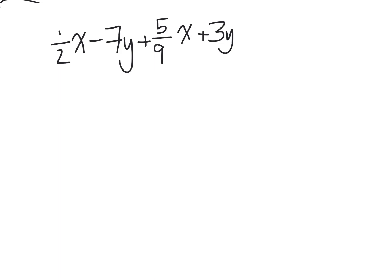Alright, so I have my example question here. I have 1/2 x minus 7y plus 5/9 x plus 3y. So I know that this term right here and this term right here are like terms, and I know that this term right here and this term right here are like terms, so I'm going to start by collecting my like terms.